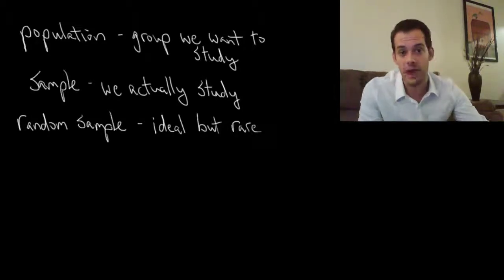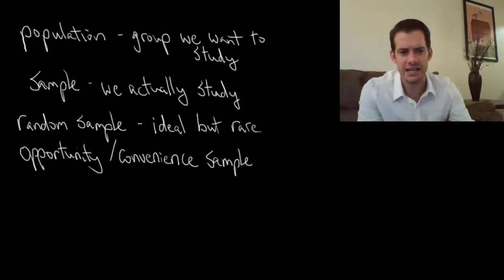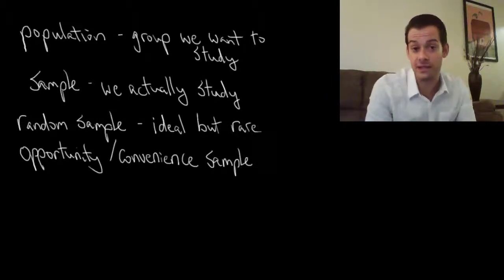So what do we do instead? Instead we have what's called an opportunity sample. Or you may also see it called a convenience sample. This is just saying that we studied the people we had the opportunity to study or it was convenient for us to study.